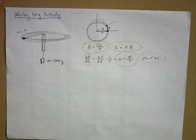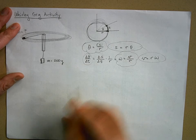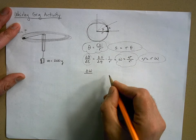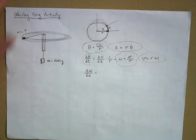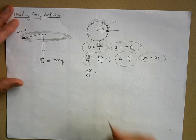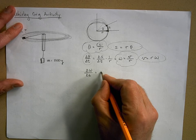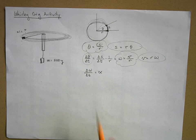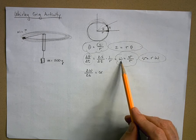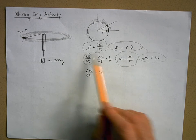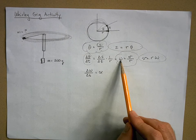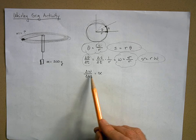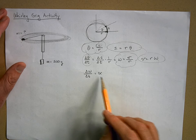If I have a change in angular speed over time, I define that as angular acceleration, using the symbol alpha. Angular acceleration is in radians per second squared — theta is in radians, omega is in radians per second, and alpha is in radians per second squared.